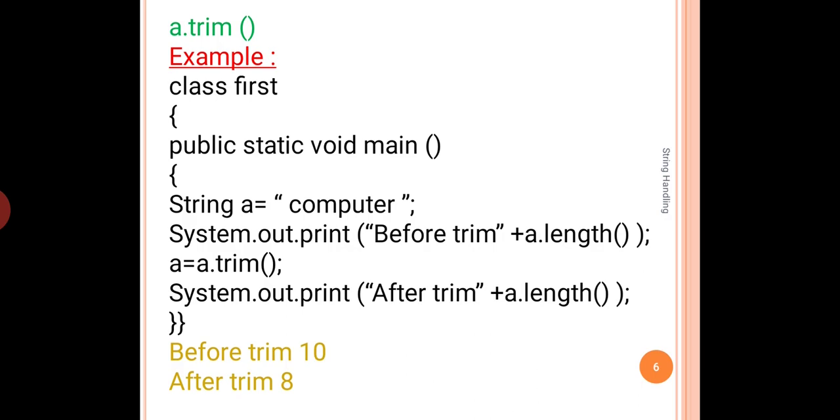As you can see here, we have the word 'computer' and there are two blanks, one before and after. So before the trim is being used, the length is being shown as 10, and after the trim has been used, the spaces have been removed and the length has reduced to 8.